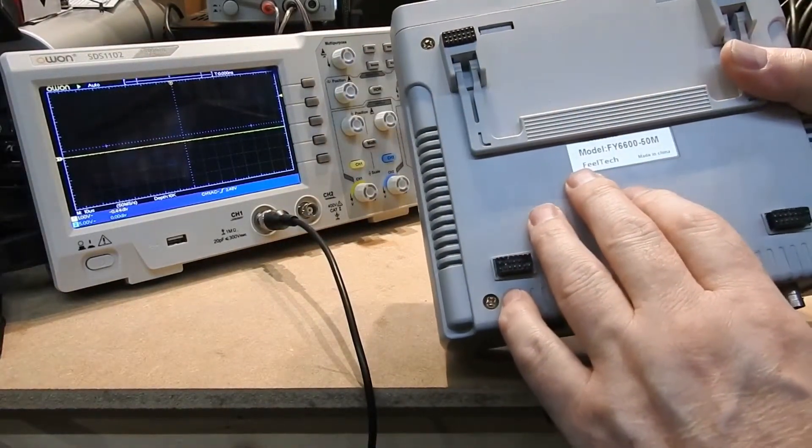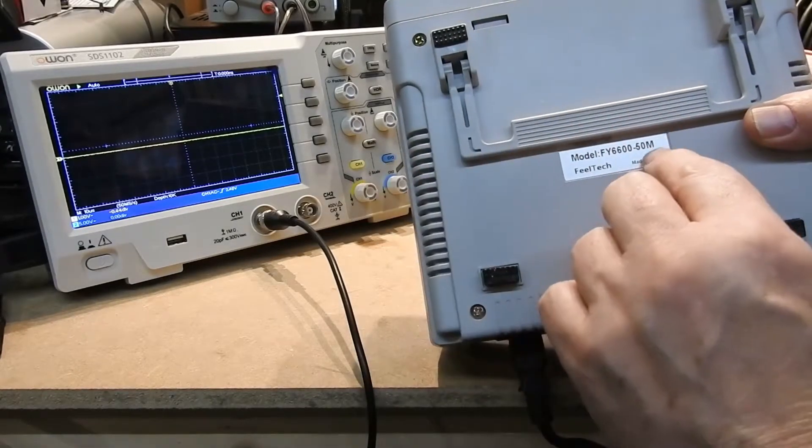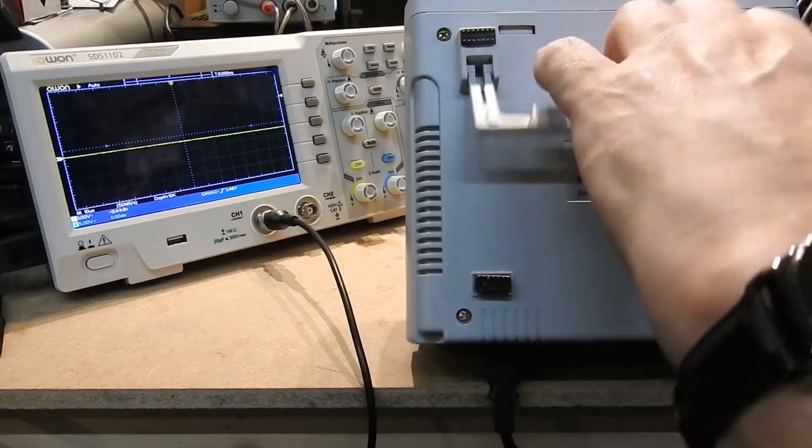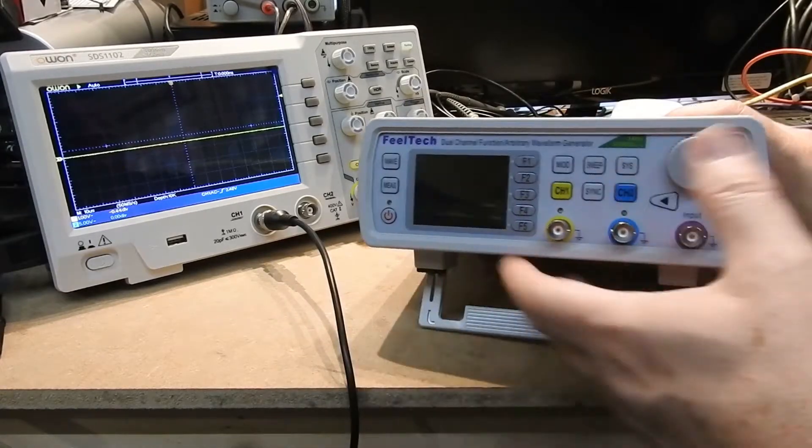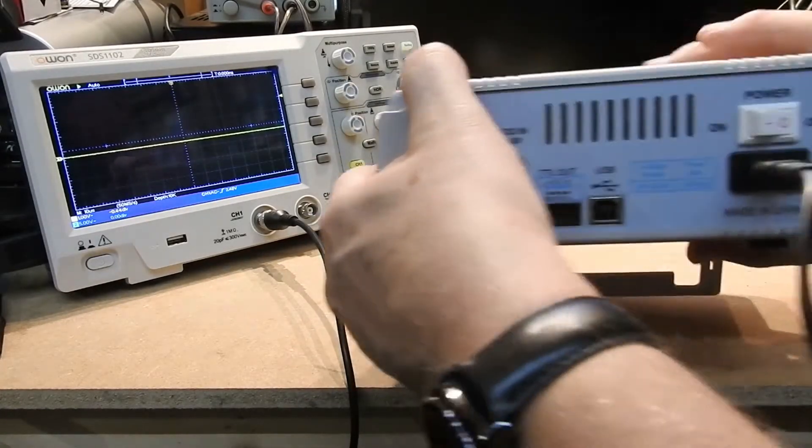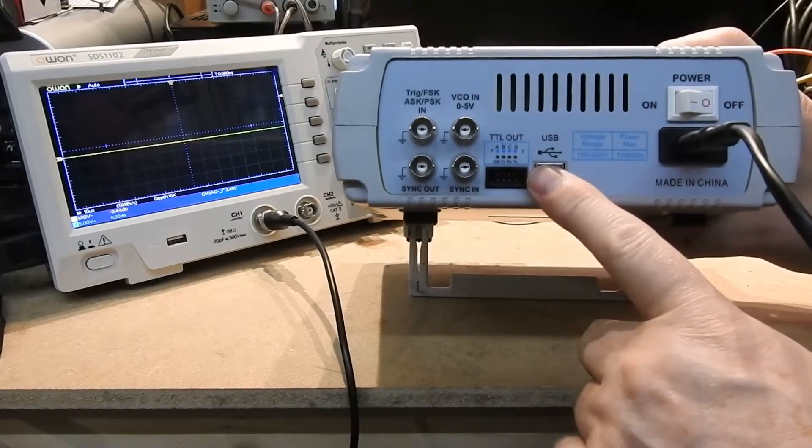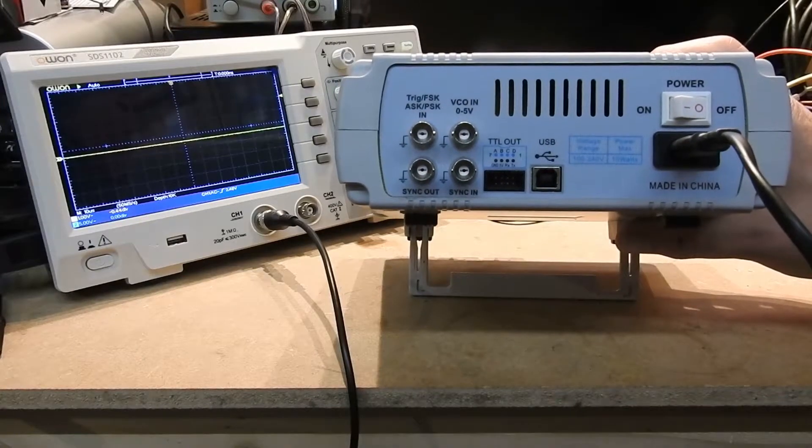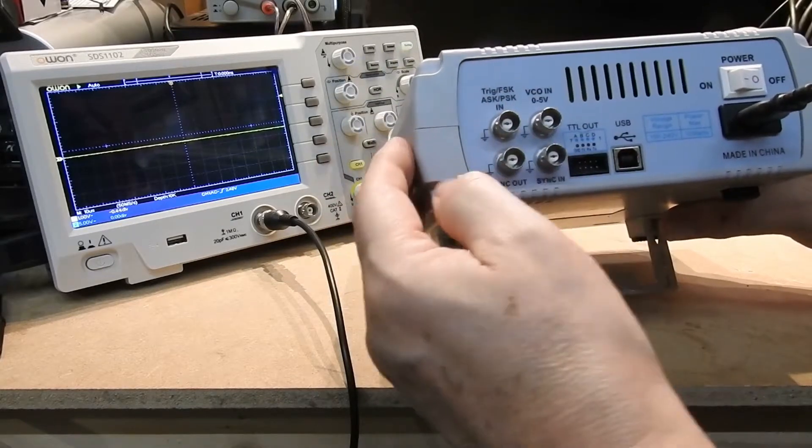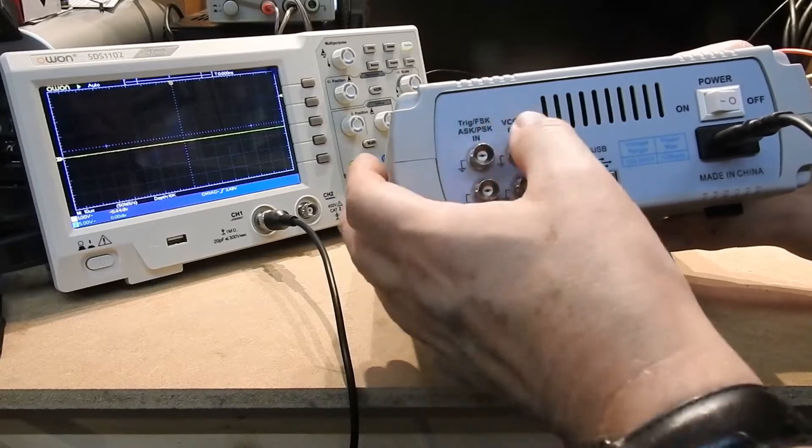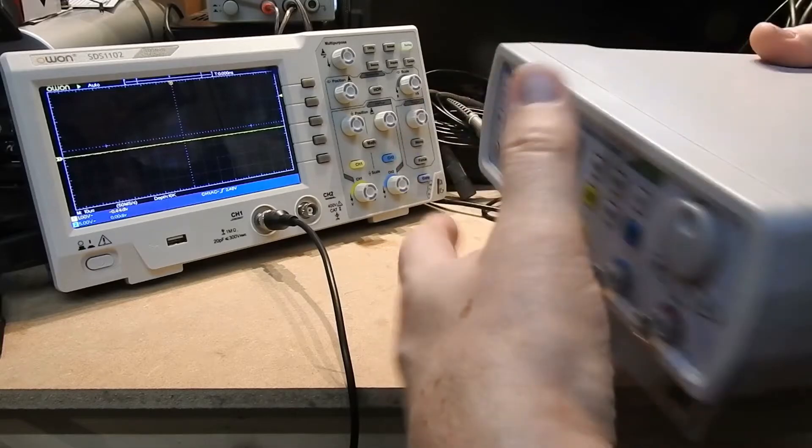Nothing on the sides, no extra connectors on the base. This is the 50 meg part number here. There are other variations on this which are lower price. So on the back we have a couple of trigger inputs, power on-off switch, USB to PC, and a TTL output which I'm not really sure about yet, and then signal clock in.